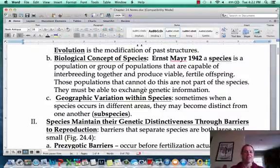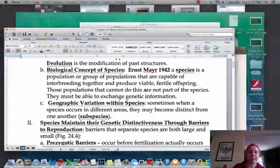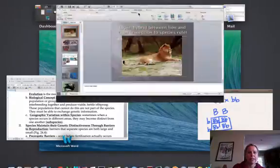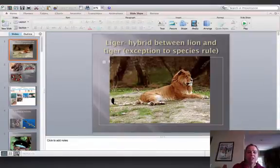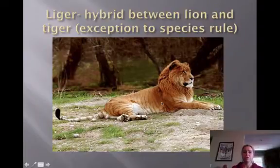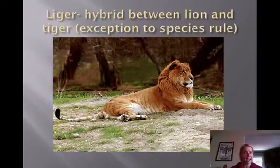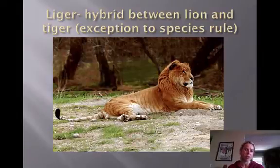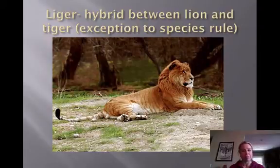You might be thinking about ligers, or the donkey-mule situation — and yes, there are going to be exceptions to these rules. There's our liger, which is the exception where you have a hybrid occurring. However, something happens to them that prevents them from going any further. There are also growler bears, which are grizzlies and polar bears that have been found mating. Nature doesn't always follow the basic rules, and that's the cool thing about nature.